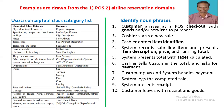The next category is other computer or electromechanical systems external to the system. For POS it is credit payment authorization system, and for airline reservation it is air traffic control. The next category is organizations. For POS it is sales department, and for airline reservation it is the airline.